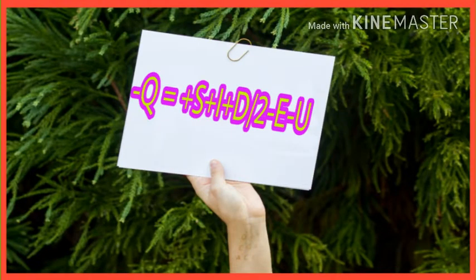The enthalpy change between the two ways are written as this formula: -Q = +S + I + D/2 - E - U. In this formula, the plus value indicates the absorption of energy, and minus value indicates the emission of energy.